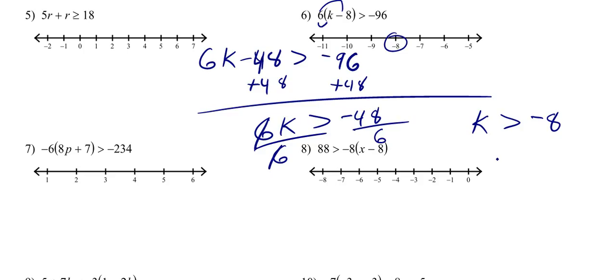And to figure out which way to shade, just plug in some numbers. Well, negative 7, that is bigger than negative 8 because it's closer to 0 on the number line. So you've got a 0 out here. So we shade in this area.